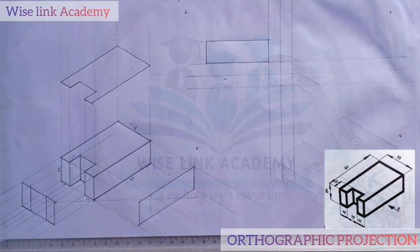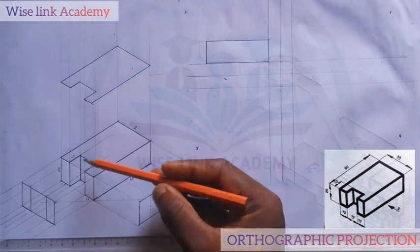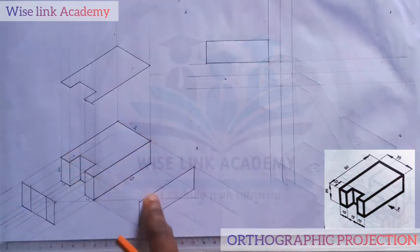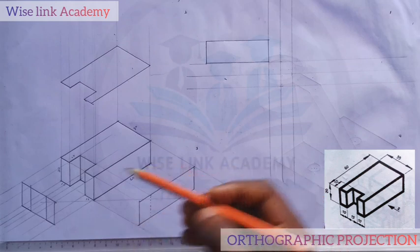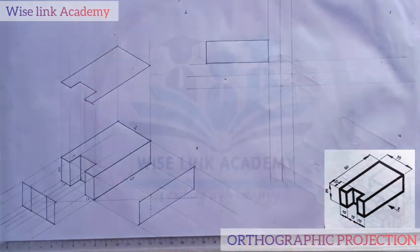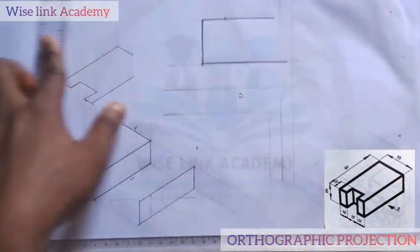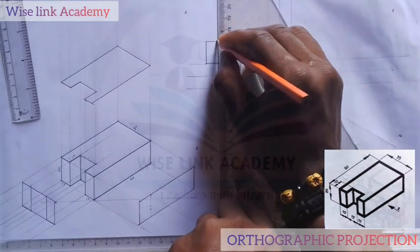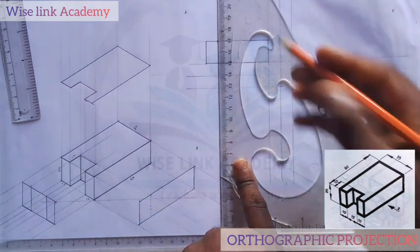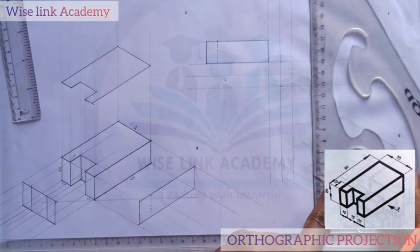But if you observe closely — if I look at this figure here, I'll be seeing a hidden line. Let me show you: this line here, if you look at it this way, you can't see this line. So this hidden line is the line you're seeing here. We said from here to here is 10, so somewhere here, measure 10. At that point I'll draw my hidden line to show that I can see this line if I look at it from this angle. So I have successfully drawn out my elevation.